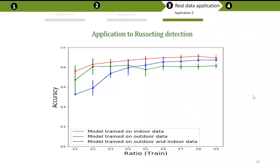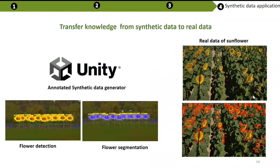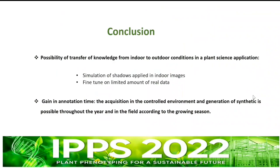In all these cases we used real-to-real data: real indoor to real outdoor. But we can also use another transfer learning approach using software dedicated to game development, such as Unity. With Unity we can generate synthetic data — for example, for flower detection and segmentation in the field, to estimate the time of flowering. We developed annotated synthetic images using Unity and applied transfer learning to detect sunflower flowers in field conditions.